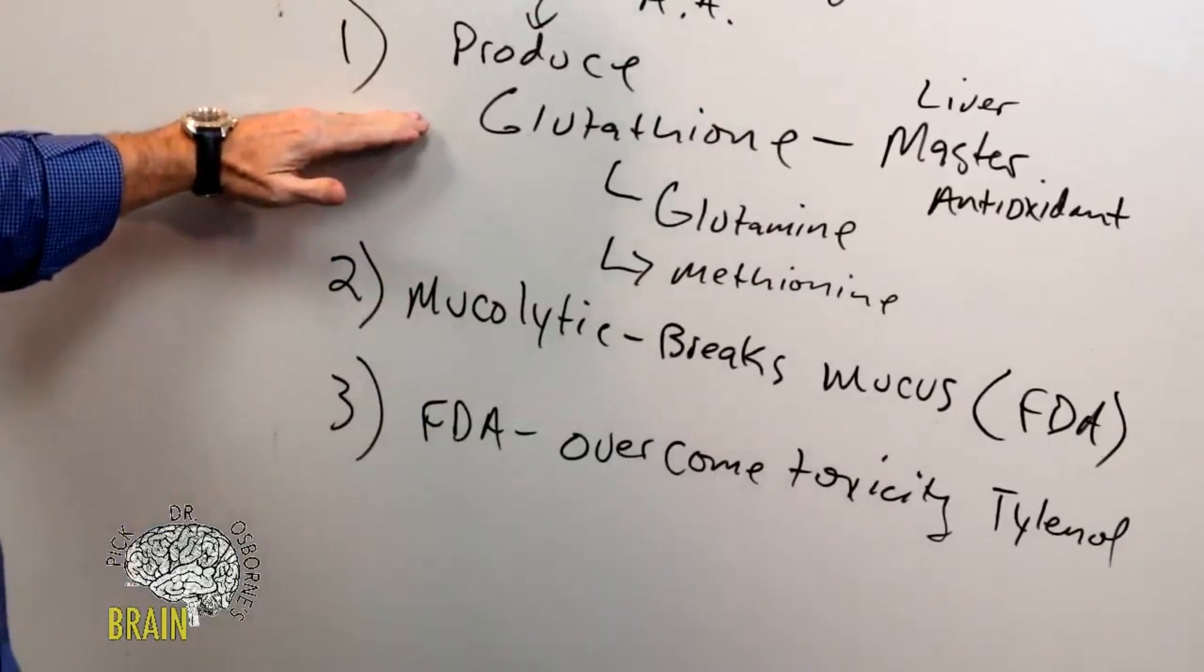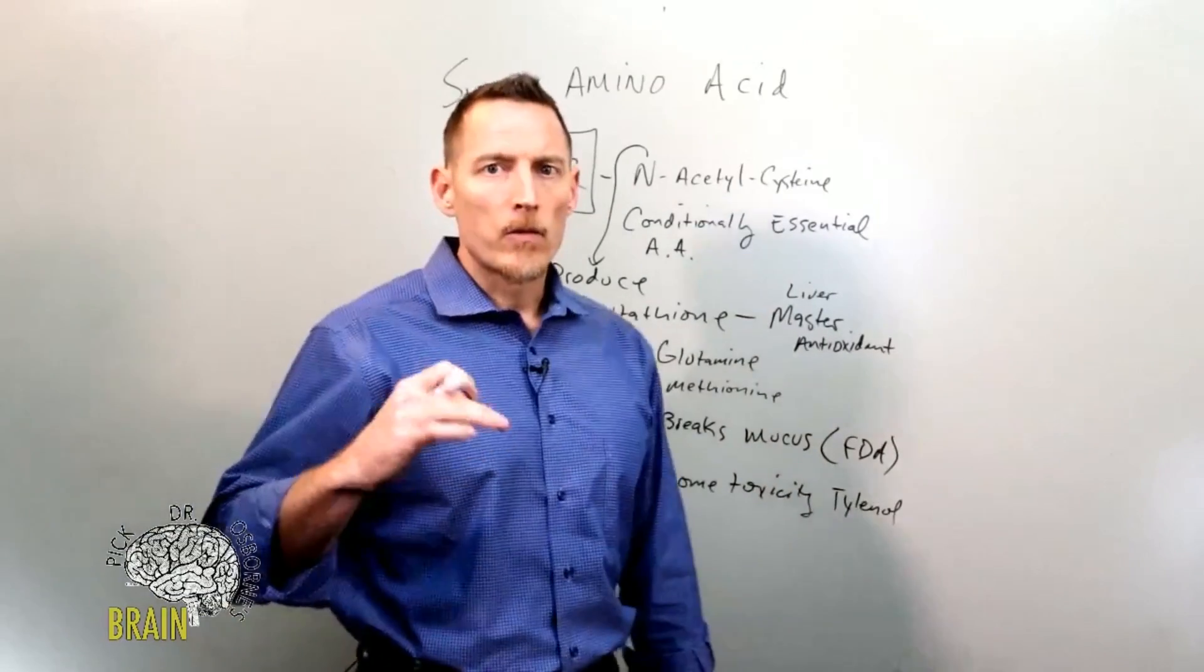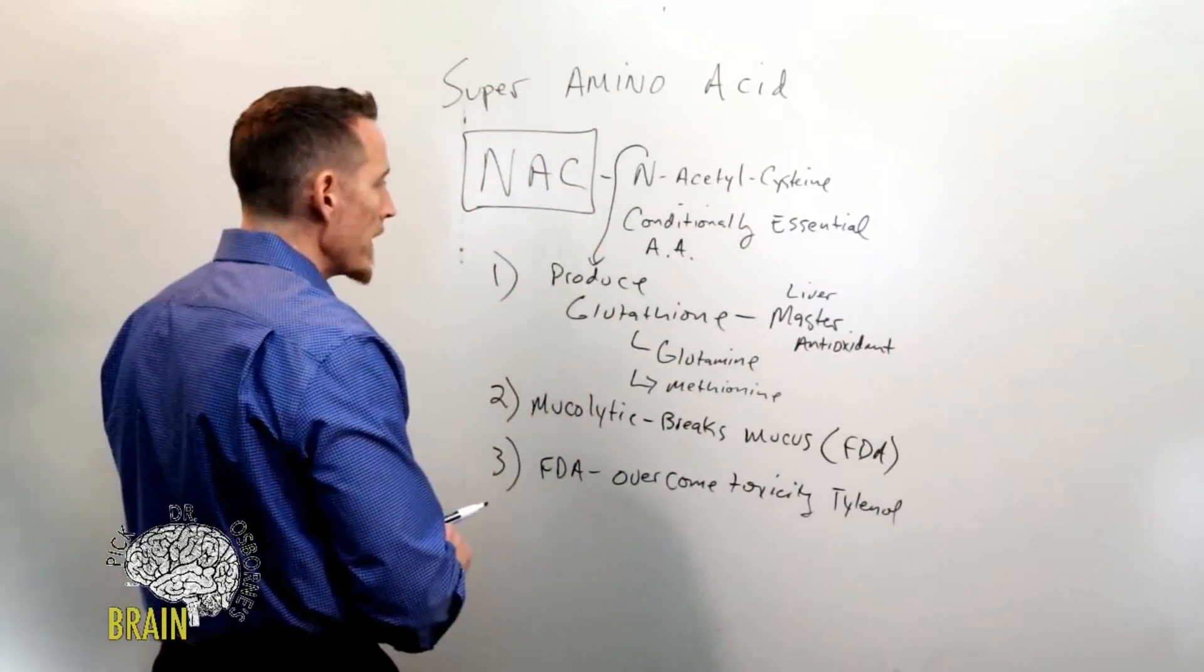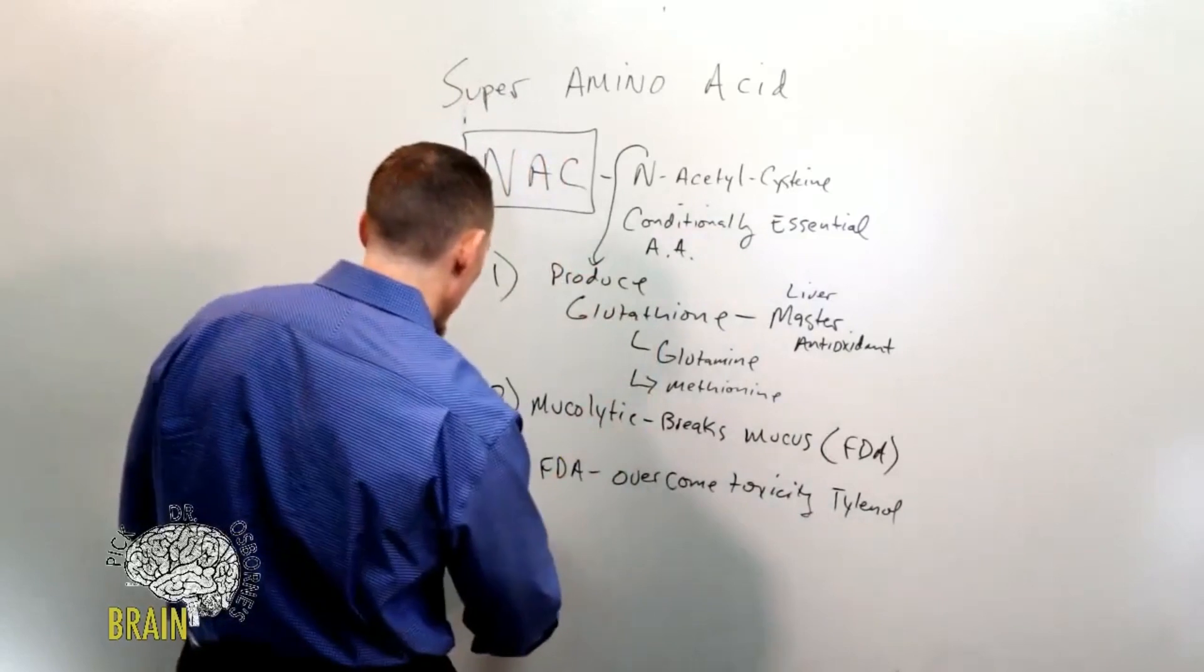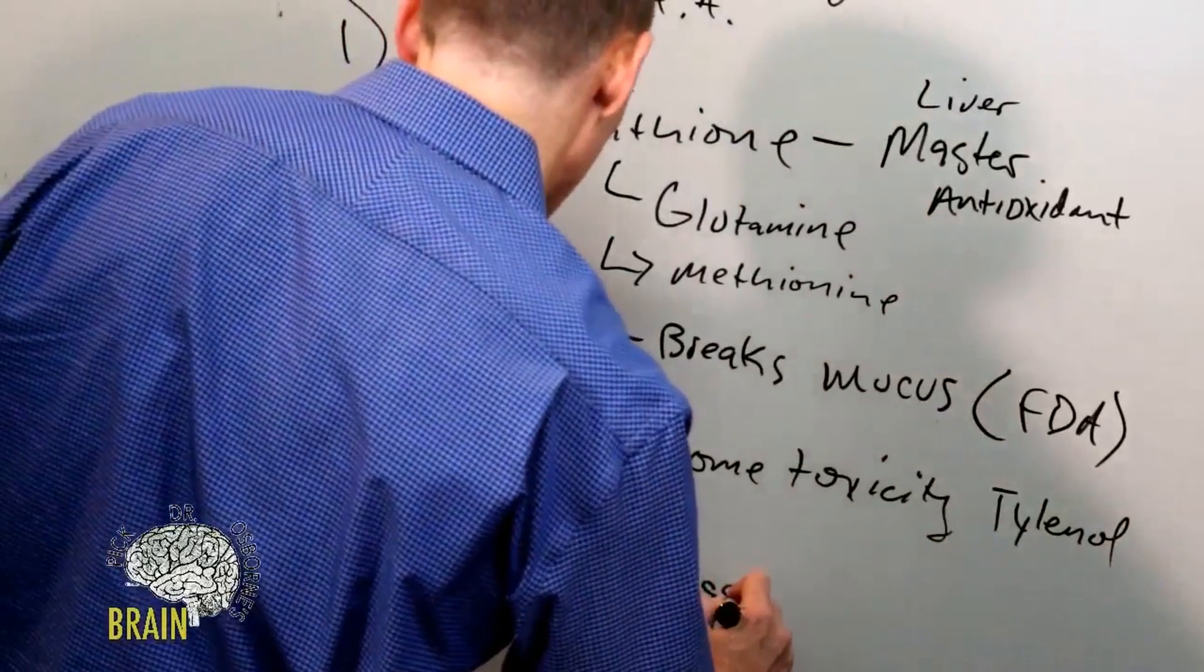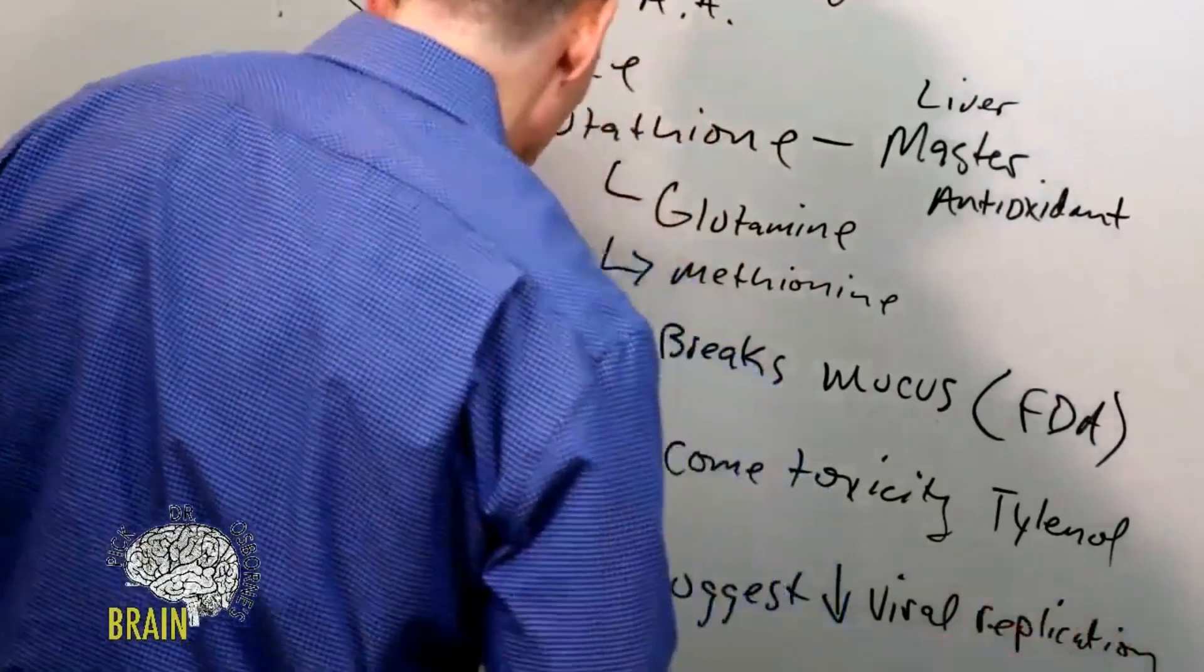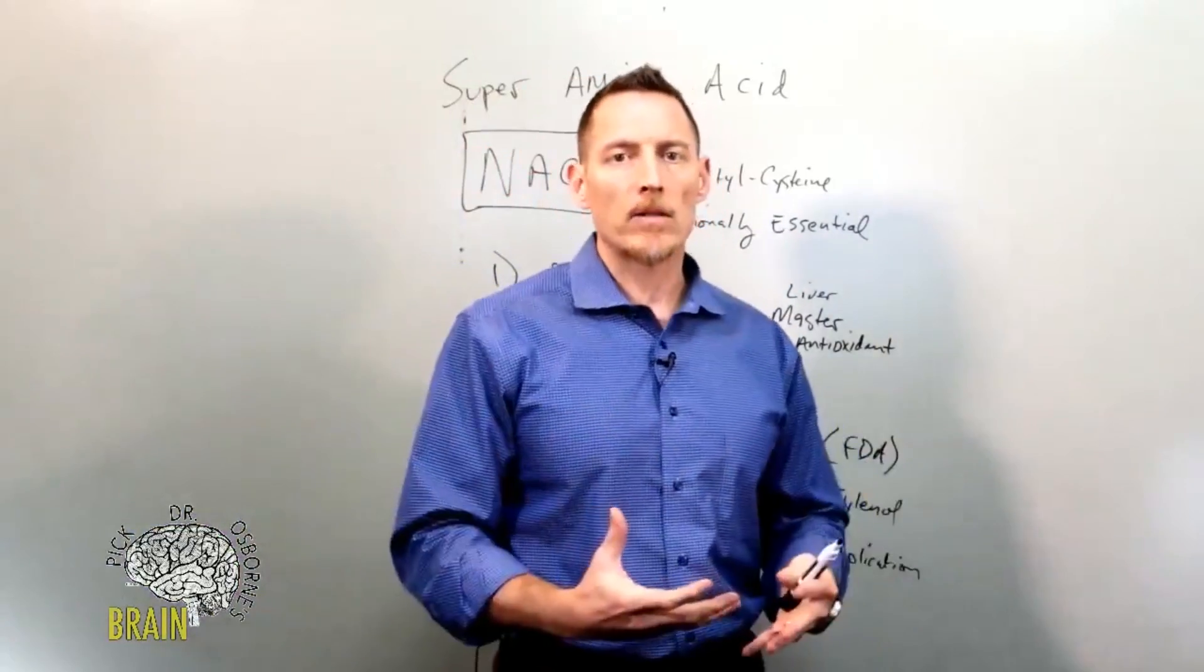What I'm interested in tonight is how does it function as an agent for improving viral infection outcomes? The theory and the thought behind how N-acetylcysteine works is that it helps to stop or reduce viral replication.